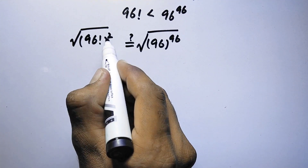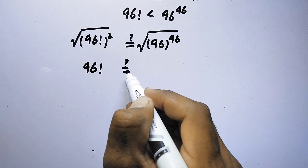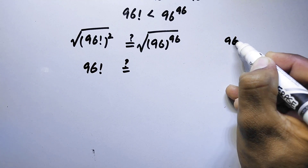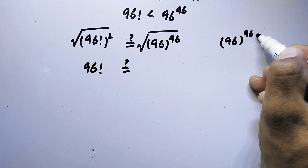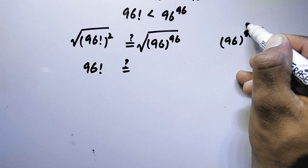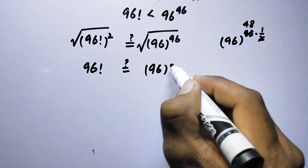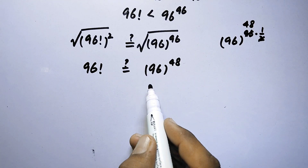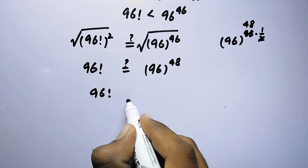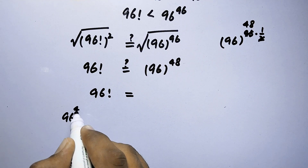Taking the square root cancels out the square on the left, giving us 96 factorial. On the right, the square root of 96 to the power 96 can be written as 96 to the power of 96 over 2, which equals 96 to the power 48. So now we compare 96 factorial and 96 to the power 48.